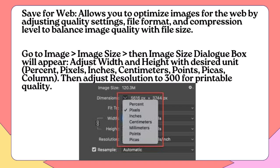Go to Image > Image Size. The Image Size dialog box will appear. Adjust width and height with the desired unit: percent, pixels, inches, centimeters, points, picas, or column. Then, adjust resolution to 300 for printable quality.